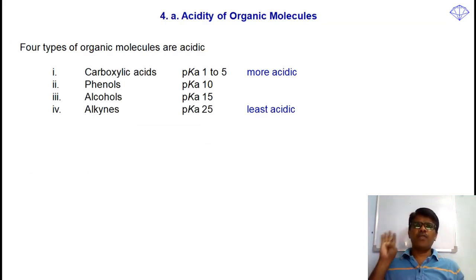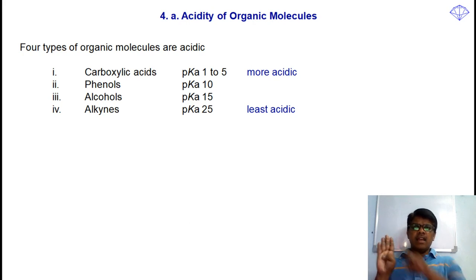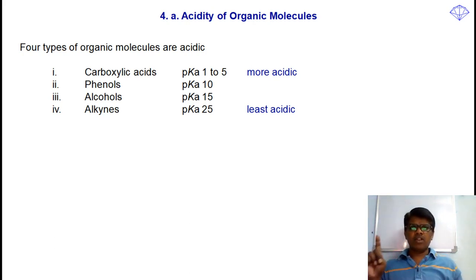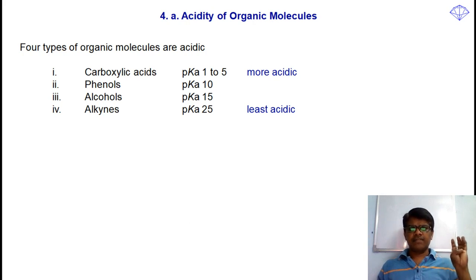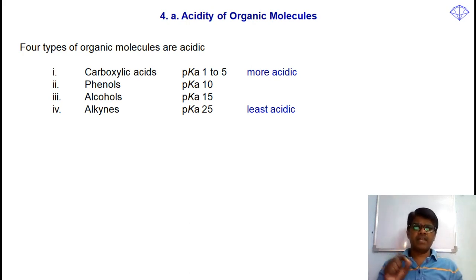In organic chemistry, there are only four types of molecules known to show acidity. They are carboxylic acids, phenols, alcohols, and alkynes. Carboxylic acids have pKa values ranging from 1 to 5 and are the most acidic in organic chemistry. Phenols are also acidic, with a pKa value of about 10. Alcohols have a pKa value of about 15 and are very weak acids. Alkynes also show acidity, with a pKa value of about 25, making them very, very weak acids.